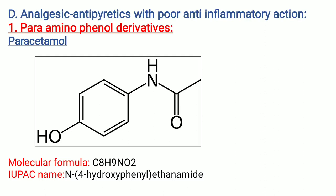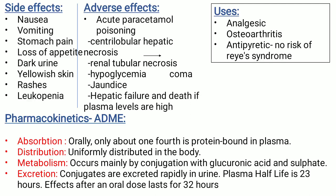Fourth category is analgesic antipyretics with poor anti-inflammatory action. First is para-aminophenol derivatives — example is paracetamol. Its molecular formula is C8H9NO2. IUPAC name is N-(4-hydroxyphenyl)ethanamide. Side effects: nausea, vomiting, stomach pain, loss of appetite, dark urine, yellowish skin, rashes, leukopenia. Adverse effects: acute paracetamol poisoning — includes cerebellar symptoms, hepatic necrosis along with renal tubular necrosis, hypoglycemia, coma, then jaundice, hepatic failure, and death if plasma levels are high.